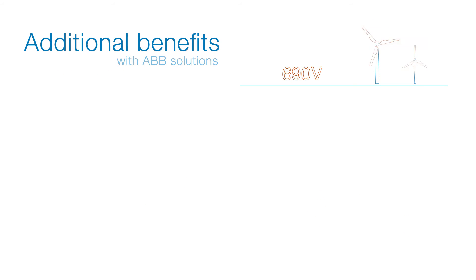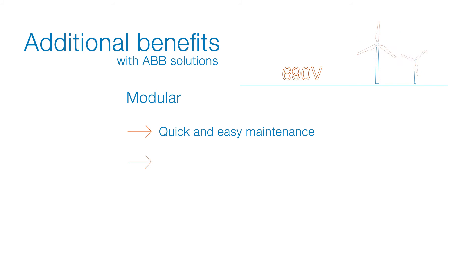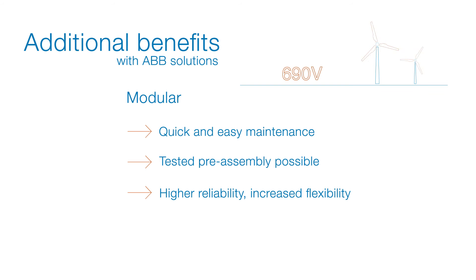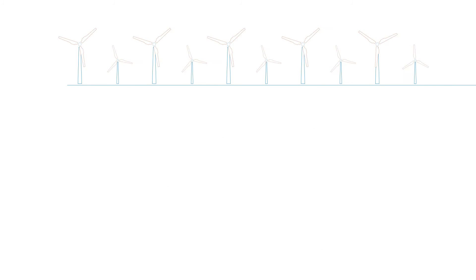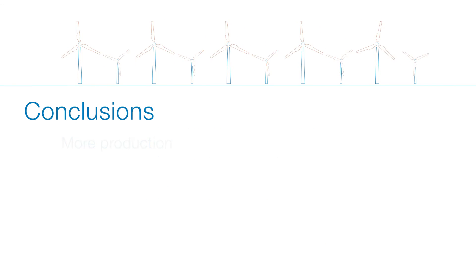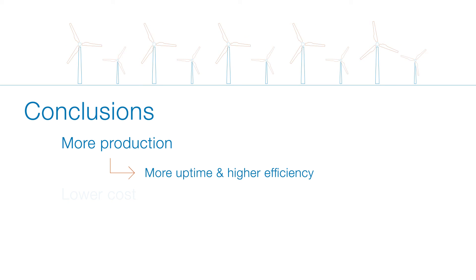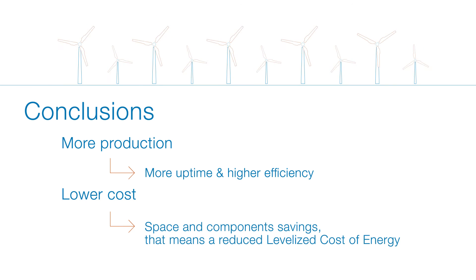Additional benefits with ABB solutions include a modular design, quick and easy maintenance, tested pre-assembly possible, higher reliability, increased flexibility, and a proven solution used by major turbine OEMs. In conclusion, this delivers more production, more uptime, higher efficiency, lower cost, and space and component savings.